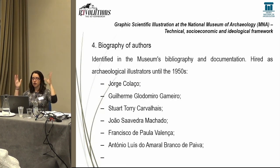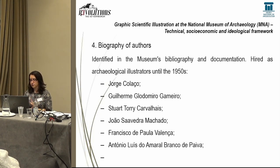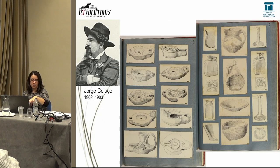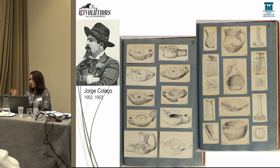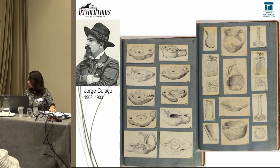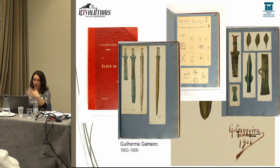We're also trying to draft the biography of the authors. So far, until the decade of the 1950s, we have already gathered those illustrators and some of their artworks. George Colasso worked from 1902 to 1903, mainly working with quill and Indian ink.